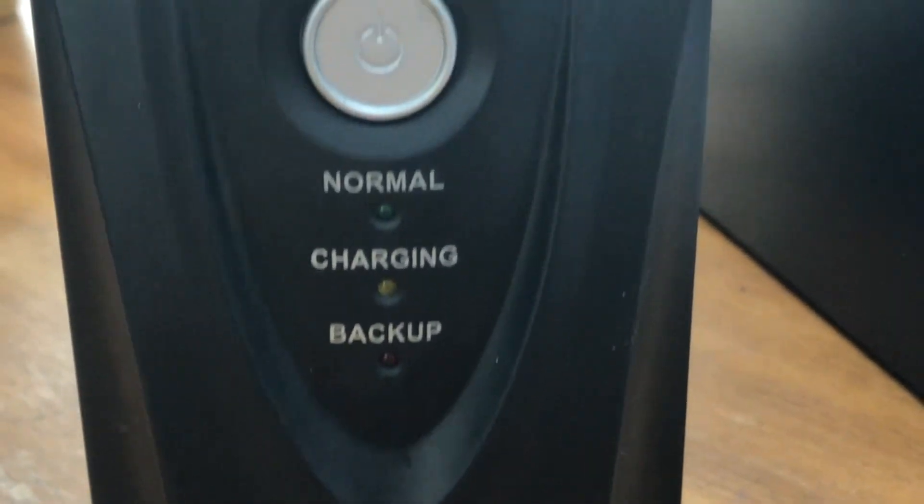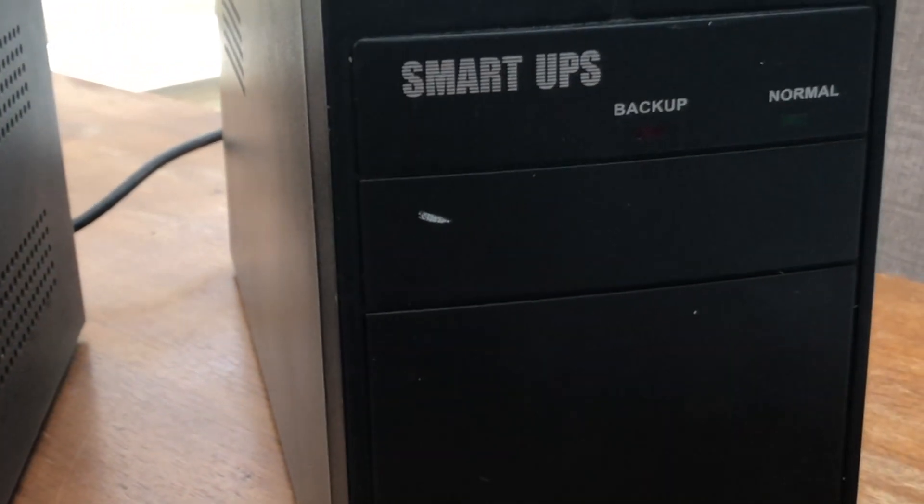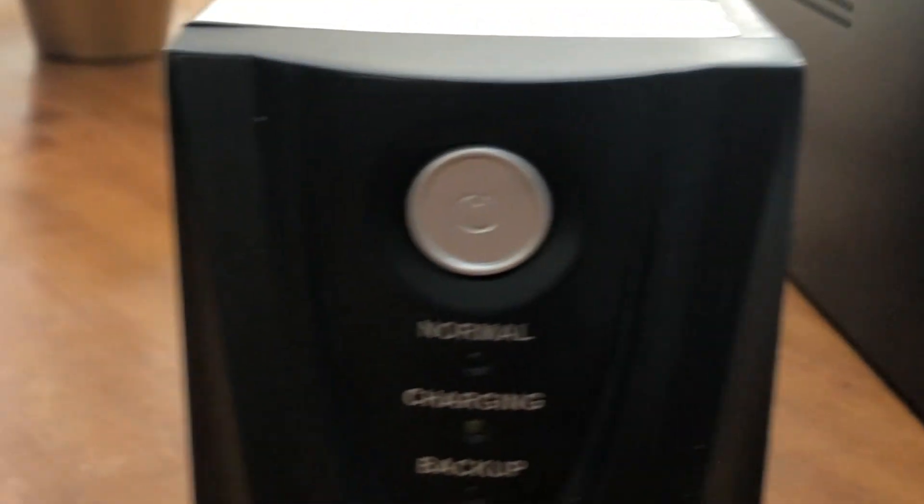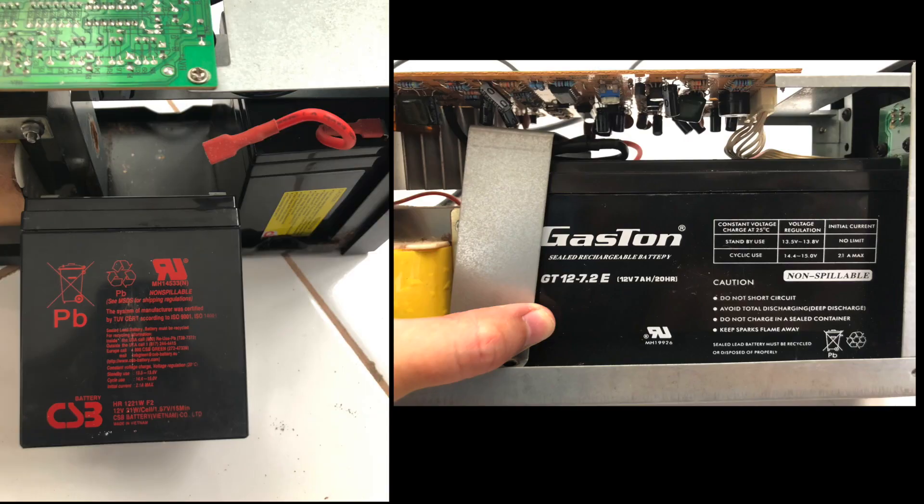So I have these two around seven to eight years old UPS. One is 600 volt ampere with 12 volt battery and the other one is 1050 volt ampere with 24 volt battery in series. Both of these old UPS batteries have lead acid batteries. I'll talk about that later on.